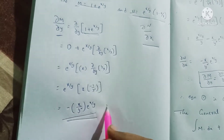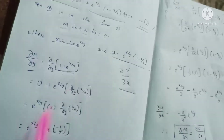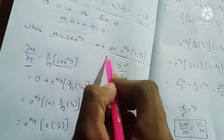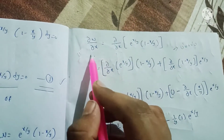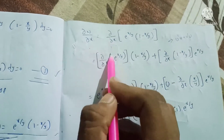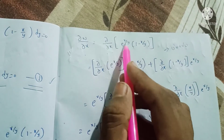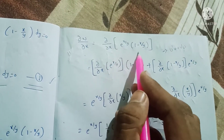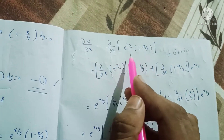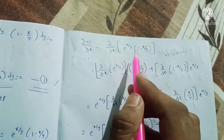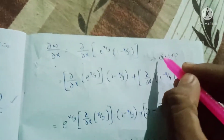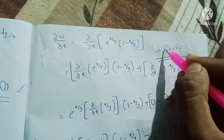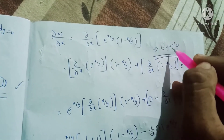This is the dou M by dou y value. Now let's compute dou N by dou x. dou N by dou x equals partial derivative of e power x by y into 1 minus x by y with respect to x. This is the UV method: U into V, so the formula is U' V plus V' U.